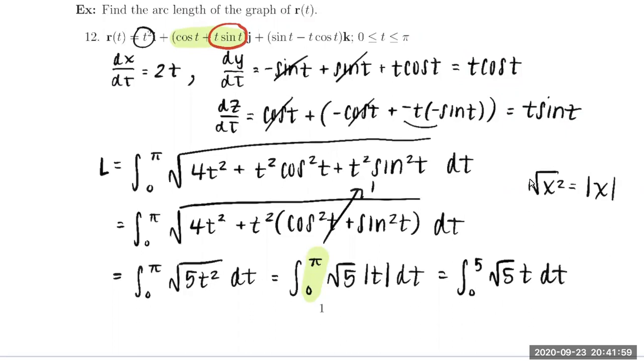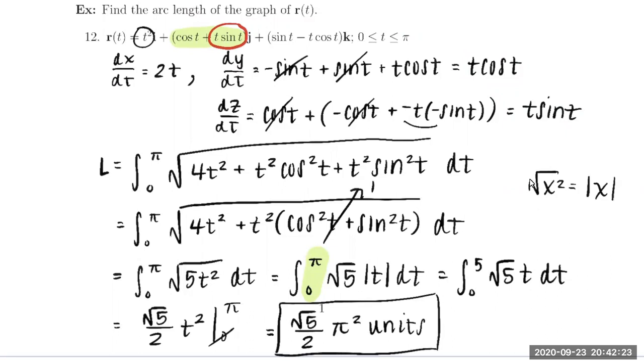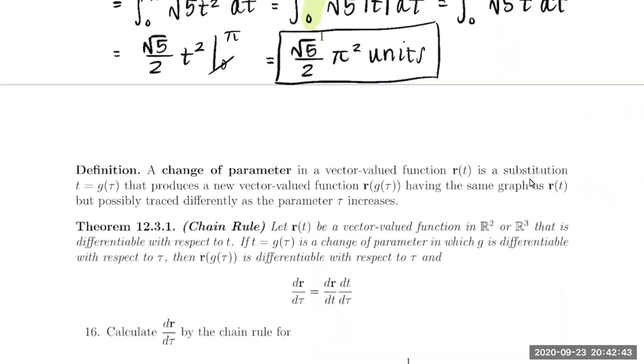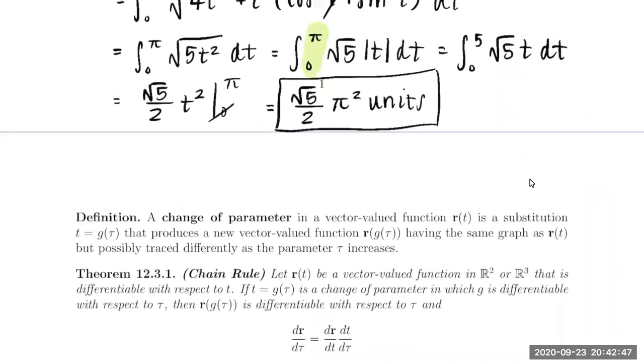And now we're just integrating a linear function. So we get the square root of 5 over 2t squared from 0 to pi. The 0 term, of course, is going to vanish. And our final arc length is square root 5 over 2 pi squared units. So again, the takeaway here is that the arc length of the curve defined by r of t between the parameter values t equals 0 and t equals pi is the square root of 5 over 2 pi squared units. All right, so that was a quick overview of arc length in three dimensions. And we want to end this section by discussing change of parameter.